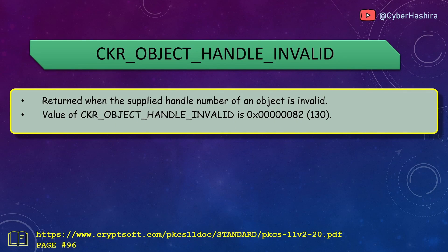CKR_OBJECT_HANDLE_INVALID is returned when an invalid handle of an object is used. Every object in PKCS11 has a handle number, and if you want to use that object you need to pass that handle number. If that handle number does not exist, CKR_OBJECT_HANDLE_INVALID is returned. Its value is 82 and is on page 96.